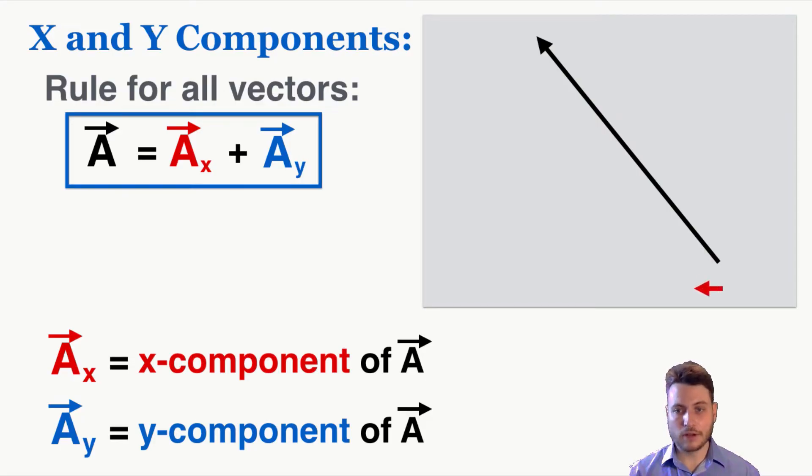You'll also notice that no matter how we draw the x component and no matter how we draw the y component, they're always going to form a right triangle with the original vector. So as another example, if we have this vector here and this is its x component and this is its y component, we can see that when we put them together in vector addition, they're equal to the original vector. So that will always be true.